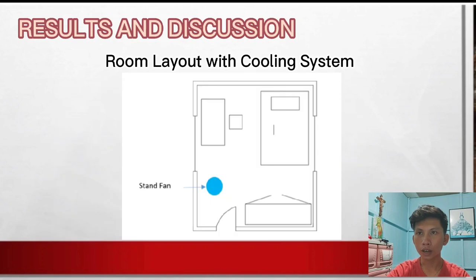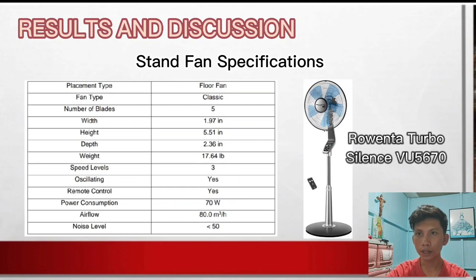This is the proposed layout of the room with the cooling system. The blue object represents the stand fan. For the stand fan specifications, the selected fan is the Rowenta Turbo Silence VU5670 standing fan. It is normally quiet by nature, never reaching above a whisper at 35 decibels in each of its five speeds, even with its powerful turbo boost mode. It is also ideal for homes and offices.